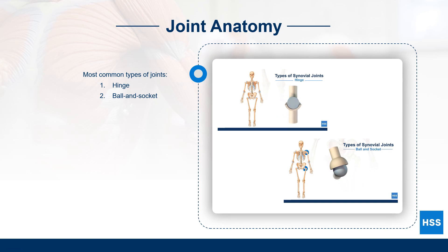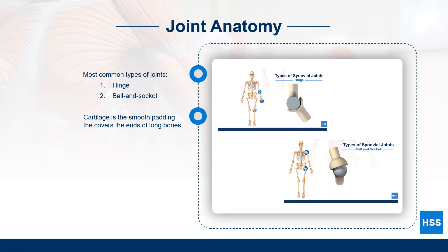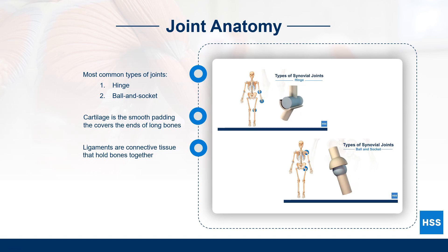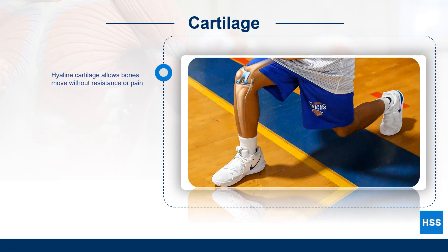Cartilage is the smooth padding found on the ends of long bones. Ligaments are band-like connective tissue that hold bones together. Cartilage found on the ends of long bones is called hyaline cartilage and allows bones to move smoothly. Cartilage in the knee joint is highlighted in blue in the picture on the right.